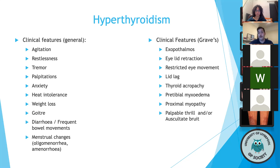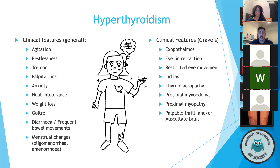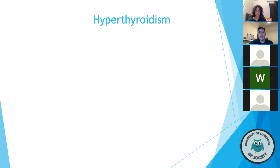You can also have a palpable thrill or a bruit — if you see that in a history, think Graves' disease. There's a schematic to demonstrate some classical features: a visual reminder that while not all patients with hyperthyroidism look exactly like this, it outlines some of the nice clinical features. So, how would we examine and furthermore manage these patients?